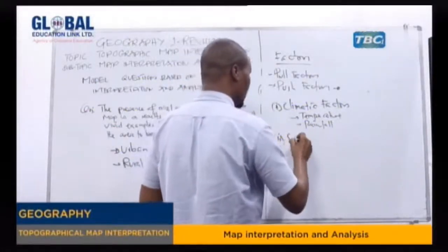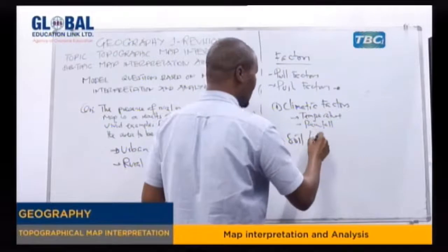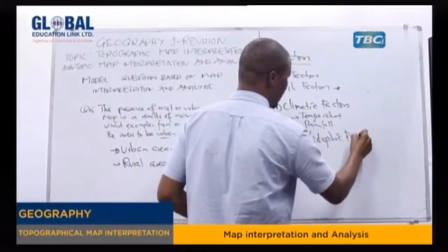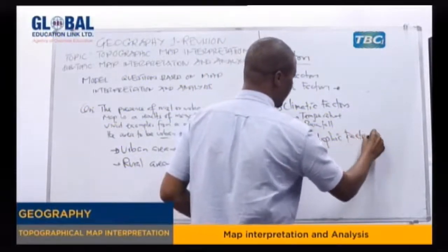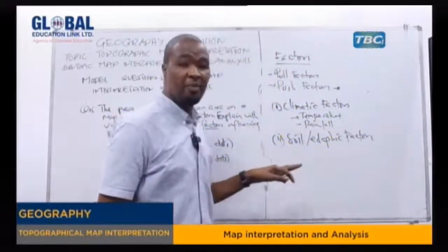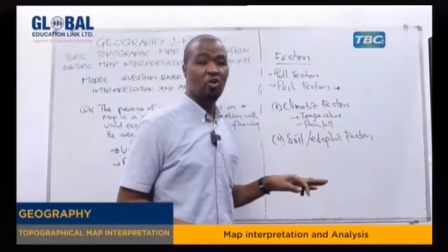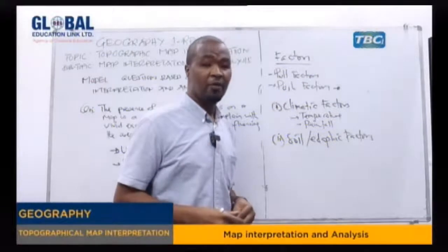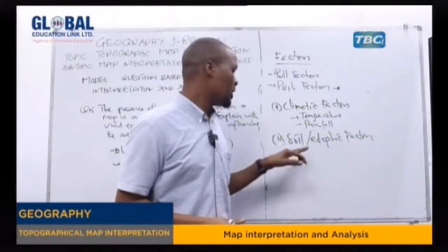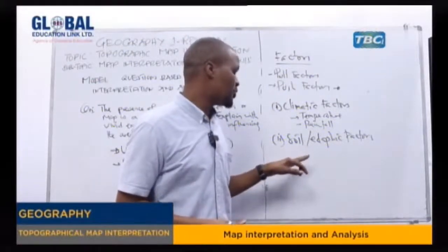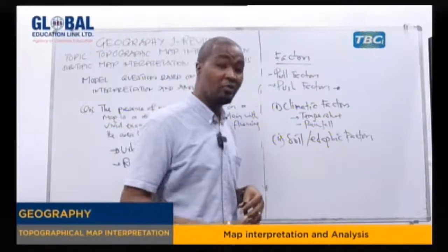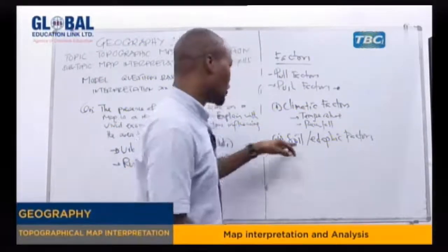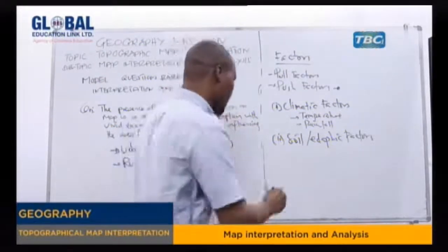We also have the soil or edaphic factor. Most people tend to prefer living in areas with good soil for agricultural reasons. Sometimes people shift from one area to another specifically to look for good soil. So soil or edaphic factors are another influence on whether an area is urban or rural.